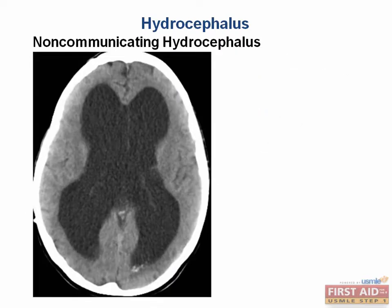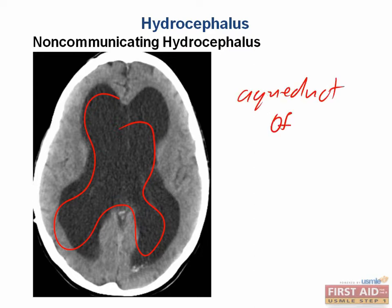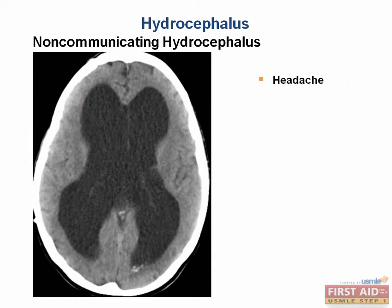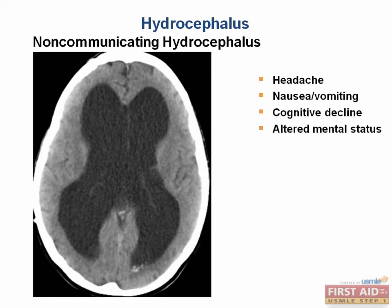Non-communicating hydrocephalus is caused by an obstruction of flow within the CSF system. On this non-contrast head CT, we see drastically enlarged lateral ventricles as a result of obstructed CSF flow, blocked secondary to a suprasellar cyst. One common place for obstruction is at the aqueduct of Sylvius. The dilation causes mass effect with symptoms including headache, nausea and vomiting, cognitive decline, altered mental status, papilledema, cranial nerve 6 palsy, and a magnetic gait where the feet shuffle along the floor.